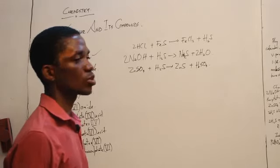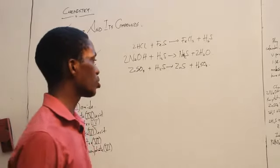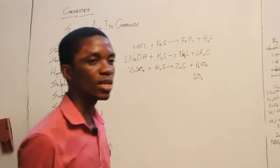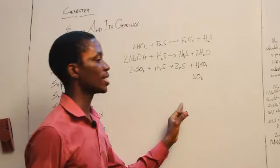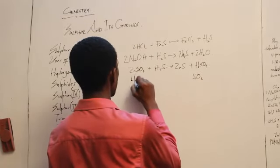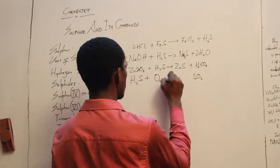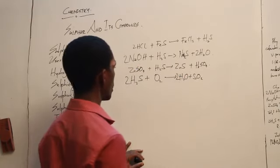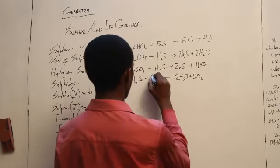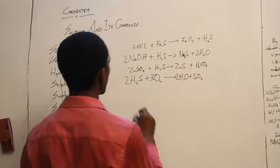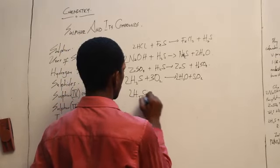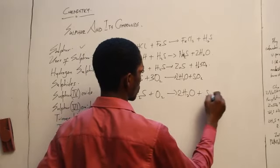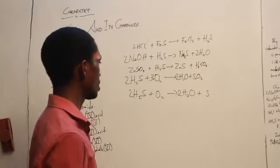H2S also reacts with oxygen. In the presence of excess oxygen, it will liberate SO2. But in the presence of limited oxygen, it simply gives you water and sulfur. In the excess oxygen reaction, the balanced equation involves 2H2S + 3O2 producing SO2 and water. In the limited oxygen reaction, it yields water and sulfur directly.